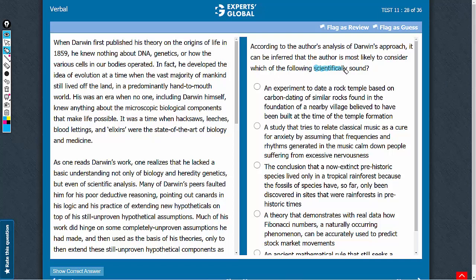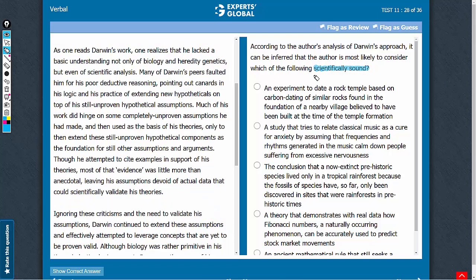Which of the following can be considered scientifically sound? As the second paragraph mentions, the author's primary objection to Darwin's theory is the assumptions that are devoid of actual data. So we need an answer choice which has some actual data and does not rely on assumptions. Let's look at the answer choices in this context.